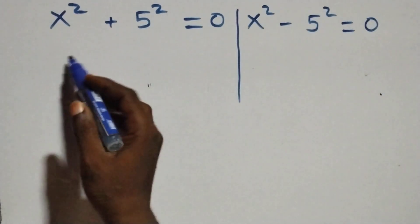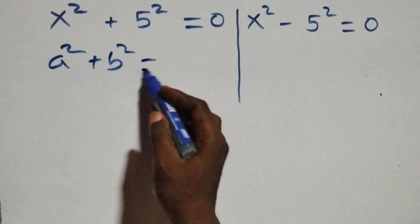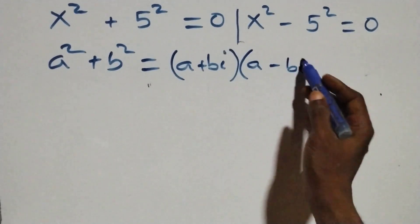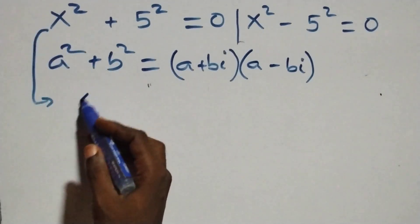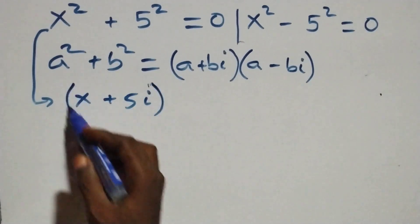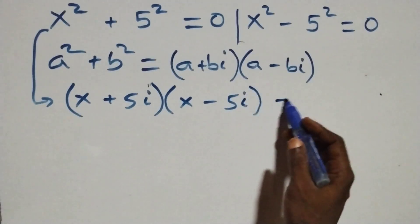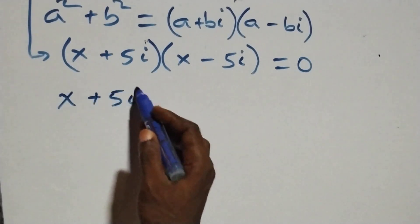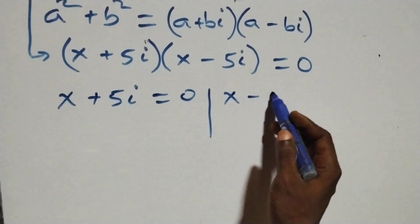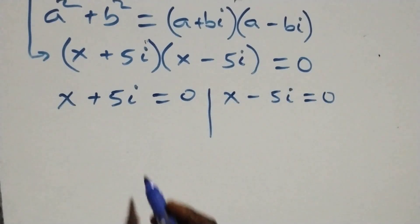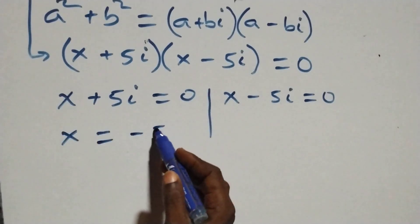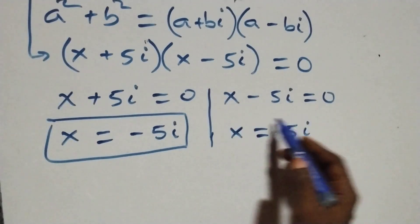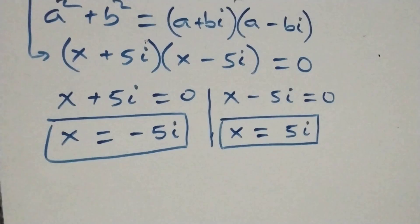Solving the first case: x squared plus 5 squared equals 0. This uses a squared plus b squared equals (a plus bi)(a minus bi). So it becomes (x plus 5i)(x minus 5i) equals 0. This gives two cases: x plus 5i equals 0, giving x equals minus 5i — a complex solution — or x minus 5i equals 0, giving x equals 5i — also a complex solution. So we have two complex solutions.